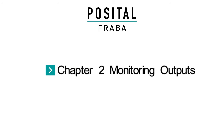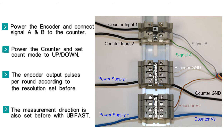Chapter 2: Monitoring Output. Power the encoder and connect signal A and signal B to the counter. Power the pulse counter and set the counter mode to up/down. The encoder outputs pulses per round according to the resolution set before, and the measurement direction is also set before with Ubifast.